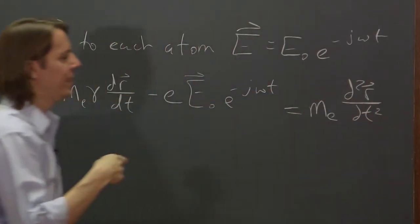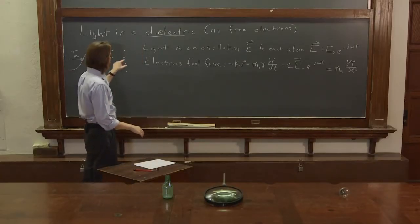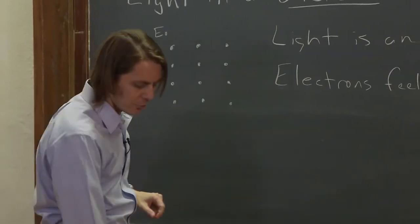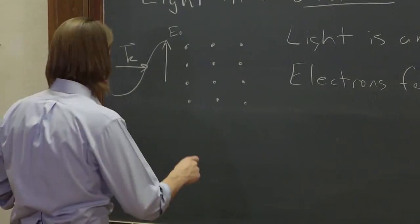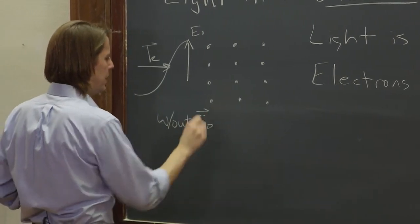So r here is this position vector that describes the position of the electron as it's moving around from its center over the nucleus. So let's go ahead and draw the electron cloud and see what it looks like.